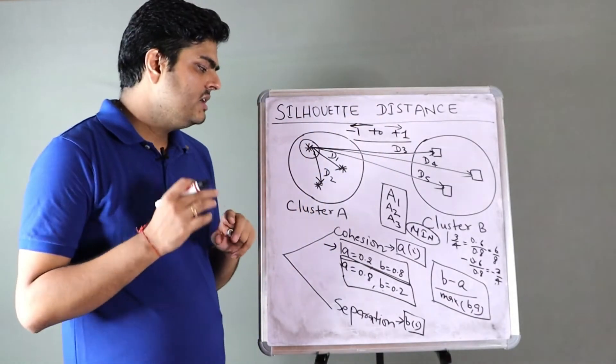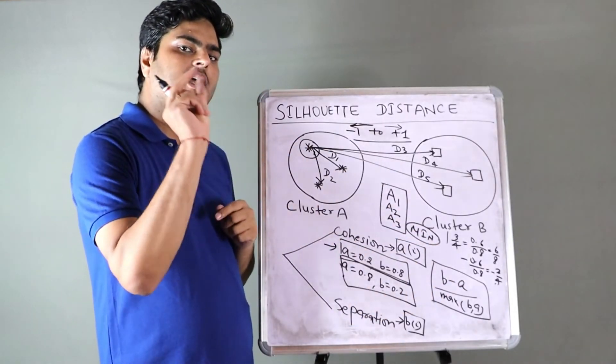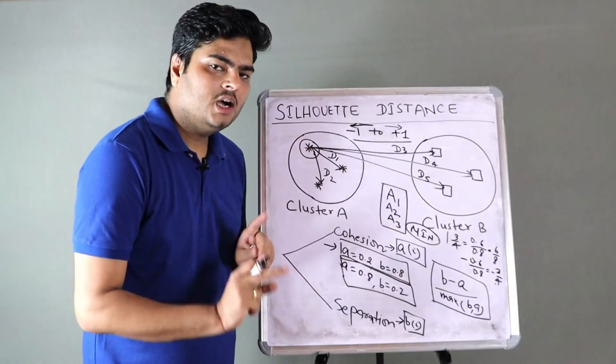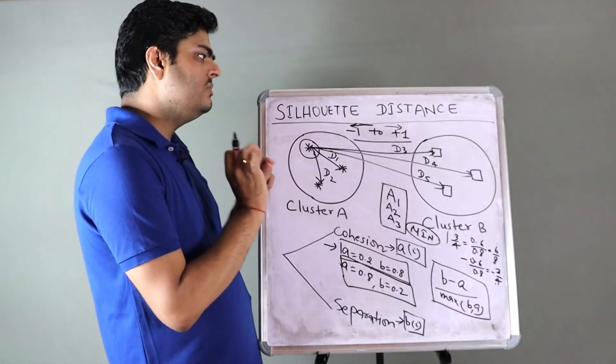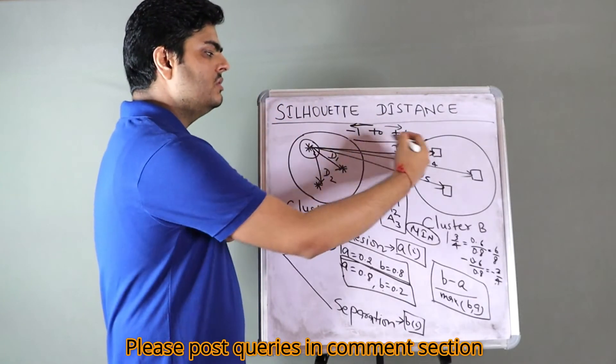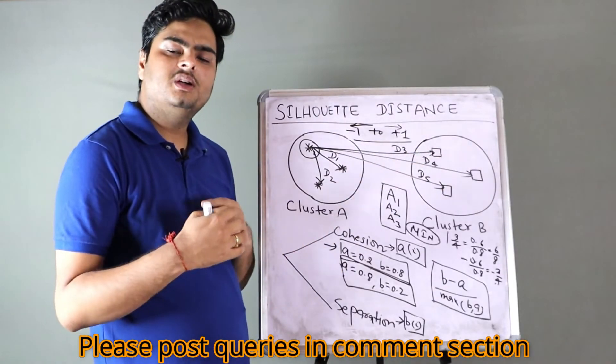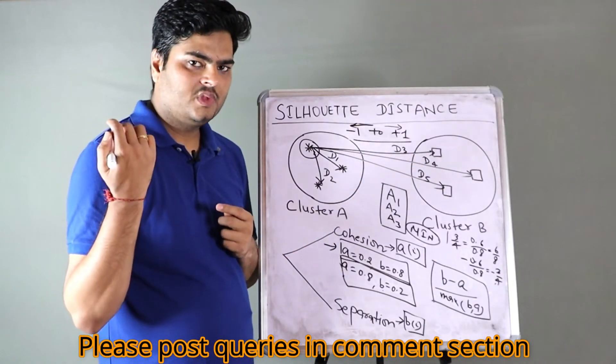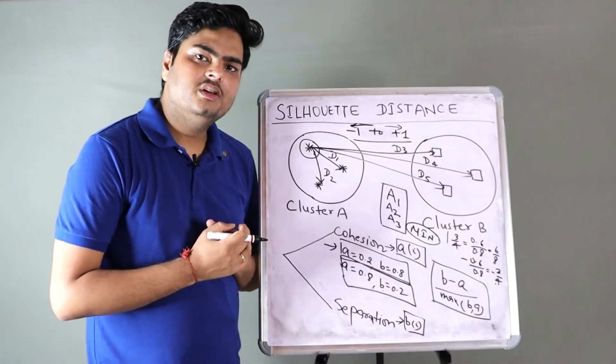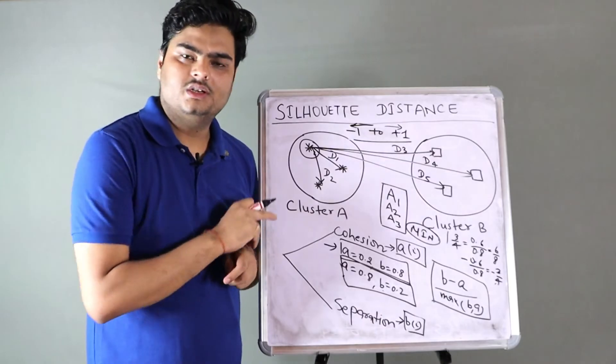What will happen in first case? Numerator will be 0.6 and denominator will be max of these two, which means 0.8, which means 6 by 8, so 3 by 4. This is the silhouette coefficient in first case. What happens in second case? B minus A is 0.2 minus 0.8, which is minus 0.6 divided by max of B by A, which is 0.8. This will also come to minus 3 by 4.